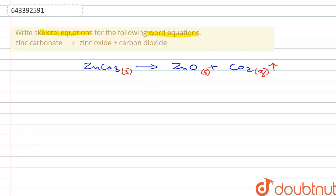Let's see if the reaction is balanced or not. We have one zinc atom on each side, one carbon atom on each side, and three oxygen atoms on each side. So this is the balanced equation.